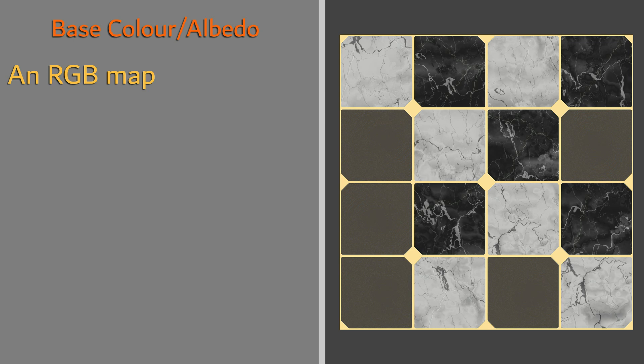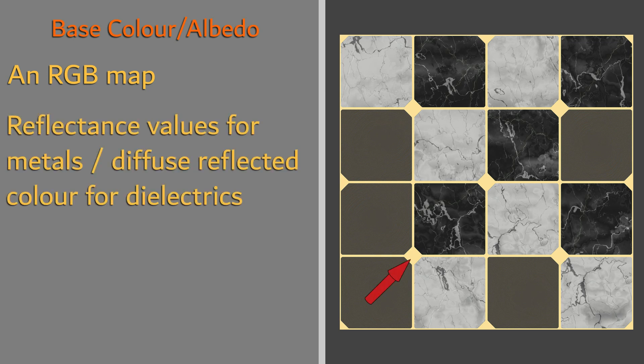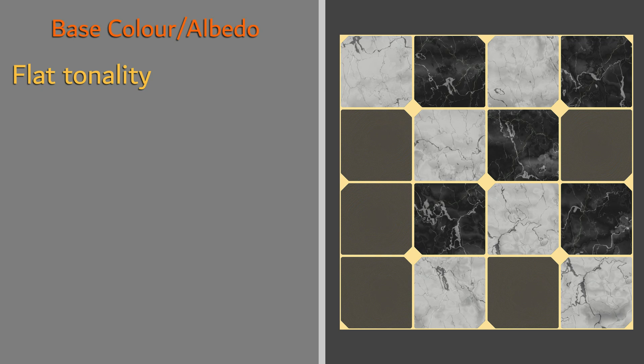The albedo is an RGB map containing two types of information. It carries the reflectance values for our metal areas and the diffuse reflected color for the dielectrics. Now that we are aware of what information this map tells the BRDF, we can have a better understanding of how to construct it. An albedo map should be considered relatively flat in tonality, with low contrast between color, vibrance, or saturation.